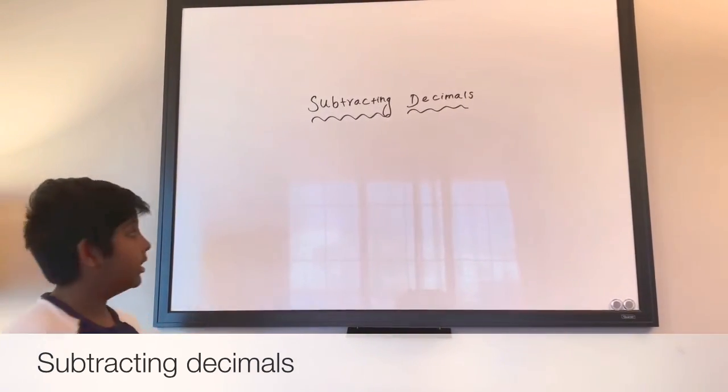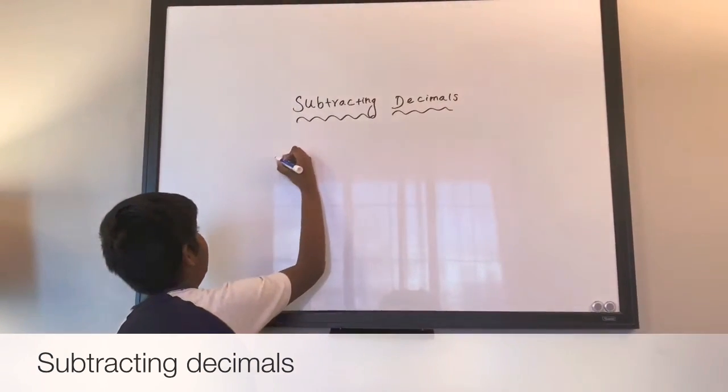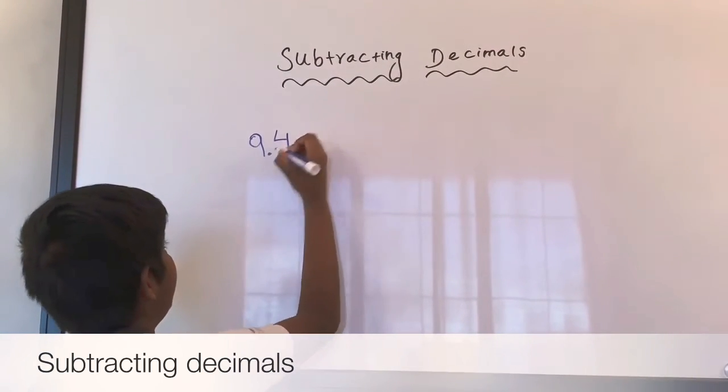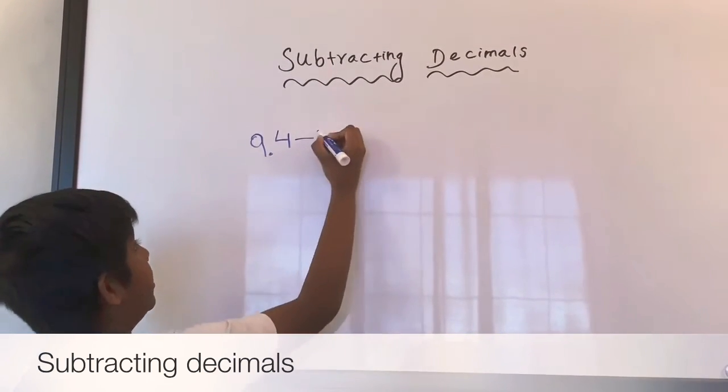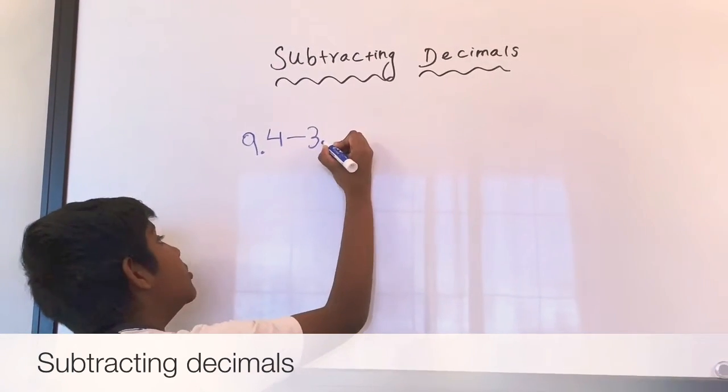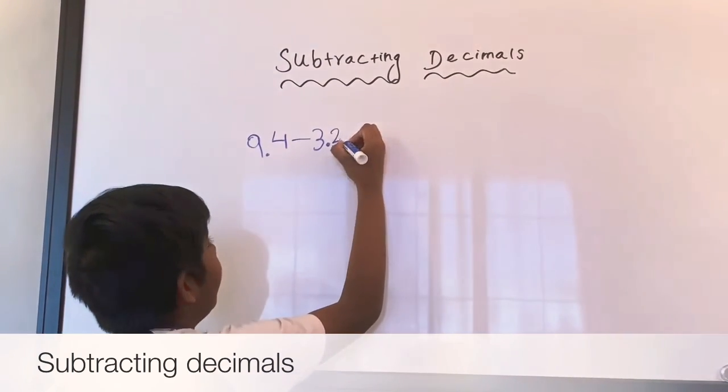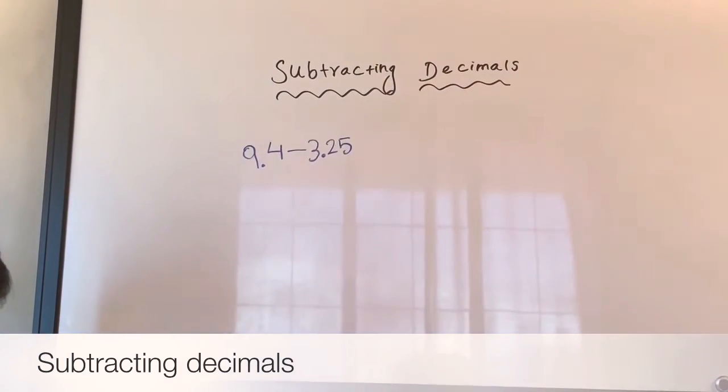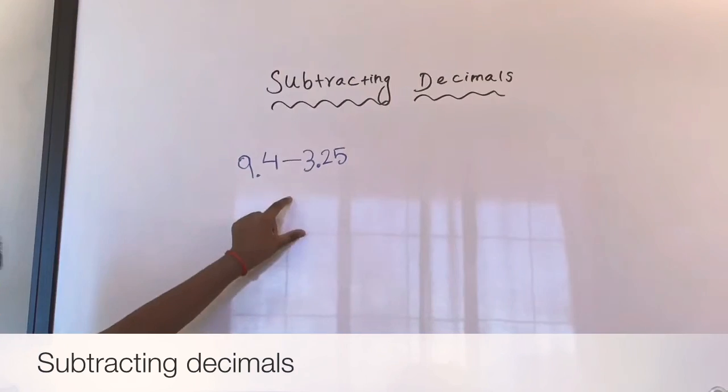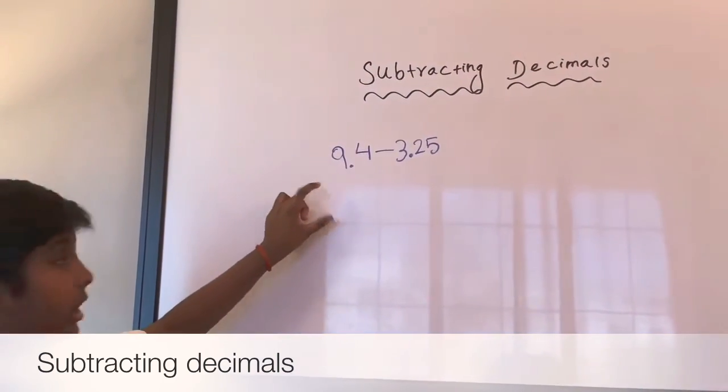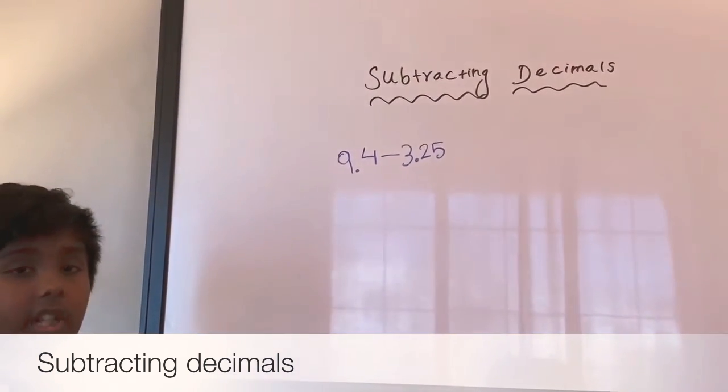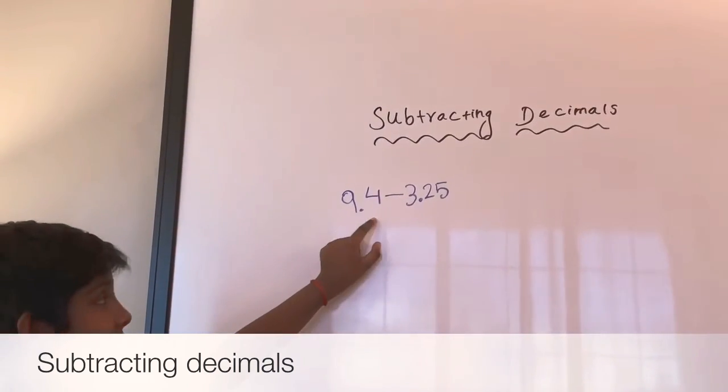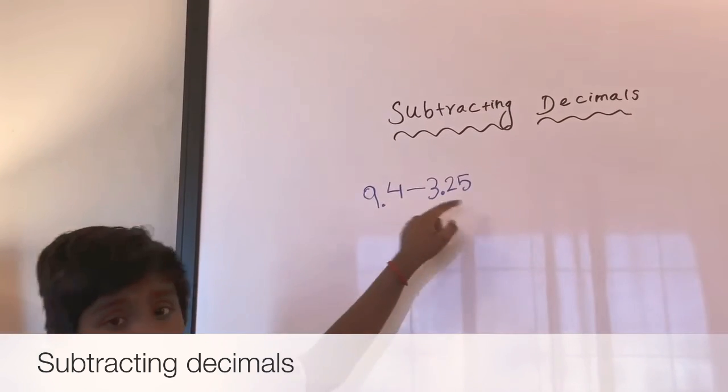First I'll start off with an easy question. Let's do like 9.4 minus 3.25. This one is a two digit decimal, this one's a one digit decimal, because after the decimal there's one digit and after the decimal there's two digits.